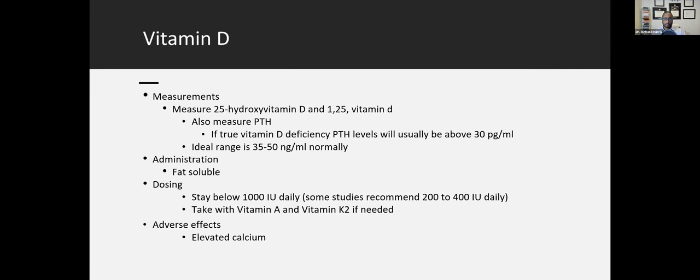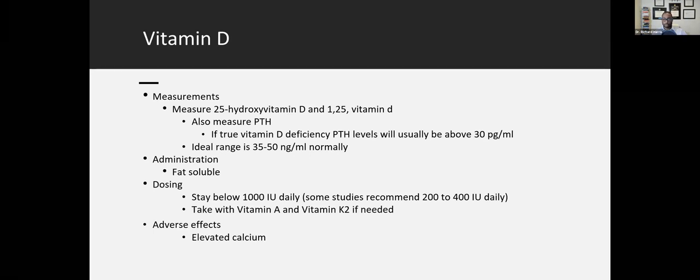So the dosing, this is the question. When your practitioner tells you to take some vitamin D, we're not talking about the megadoses. Megadoses is like 50,000 units a week, or we're not even talking about 10,000 units a week. What the data shows is you want to stay below 1,000 international units daily. Some studies even recommend lower than that, 200 to 400 international units daily. And that's if we check all those labs we talked about to make sure and it shows that you have a low vitamin D.